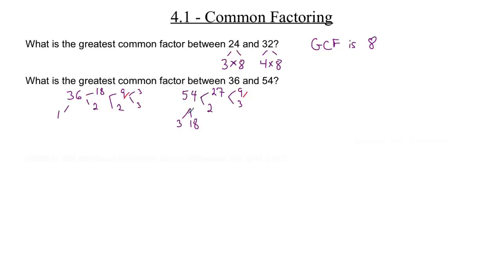You really need to know your multiplication tables. You need to try and try again until you get the highest factor. The actual greatest common factor between 36 and 54 is 18. The GCF is 18.